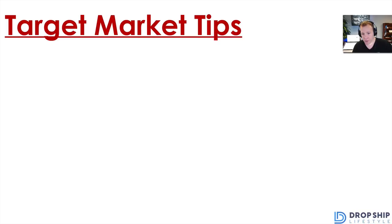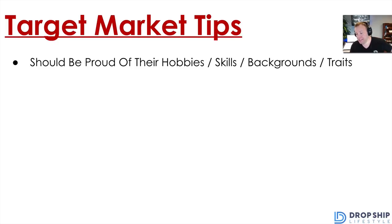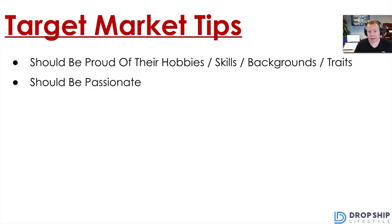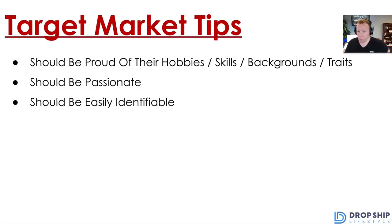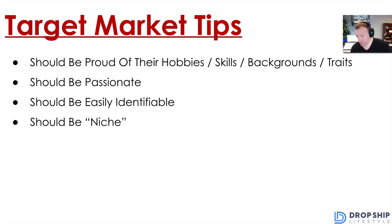Here are some tips for your target market. The people in your segment should be proud of their hobbies, skills, backgrounds, and traits. They should also be passionate about what they're into, easily identifiable online, and niche — a specific subsection of a market. Good examples: home grillers, student athletes, dog owners, and watch collectors. A bad example would be targeting rabid online shoppers — they're identifiable, but not niche, not passionate, and won't actively engage with your content.